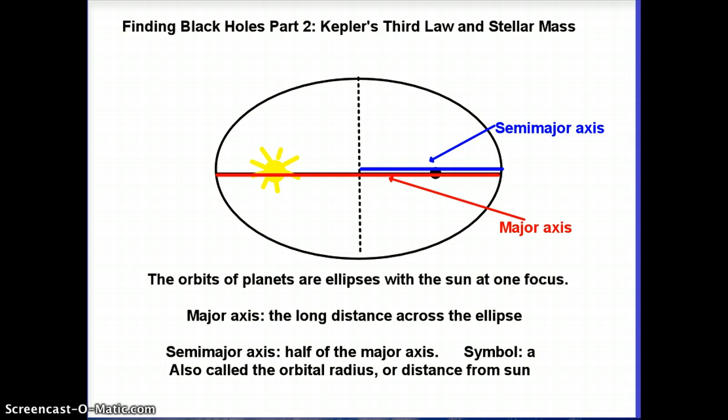This is how we find mass of pretty much everything in space, and this is something called Kepler's Third Law. Johannes Kepler was an astronomer in the 16th century, and he is famous for having come up with laws of planetary motion.